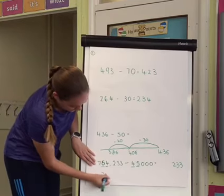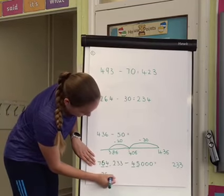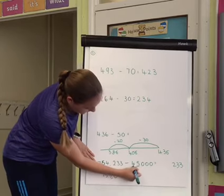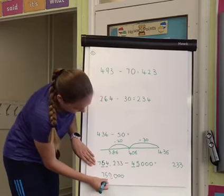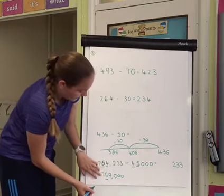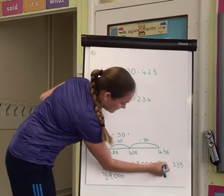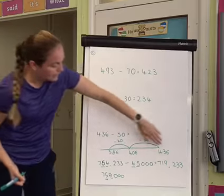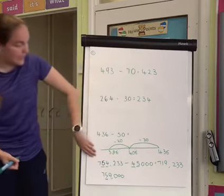I'm just going to write this down here as a little jotting to remind me. Or 759,000 rather, as my little jotting. And then I've got to take my 4 away from here, which is going to give me 719,000. And then I've got my 233, which I didn't need to change if I had my zeros here.